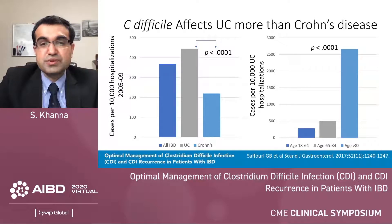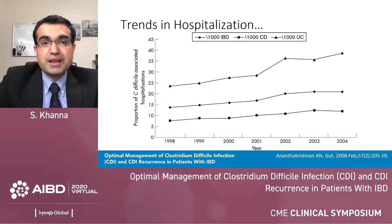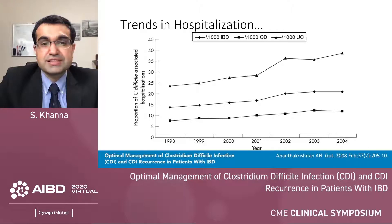Within the ulcerative colitis population, when broken down by age, the incidence is highest in patients over 85, but younger patients with underlying ulcerative colitis also have C. diff infection. There have been more and more hospitalizations in IBD patients with underlying dysbiosis that leads to C. diff infection. The proportion of C. diff-associated hospitalizations is highest in ulcerative colitis, lower in Crohn's disease, but the trend shows a continuing increase for both.